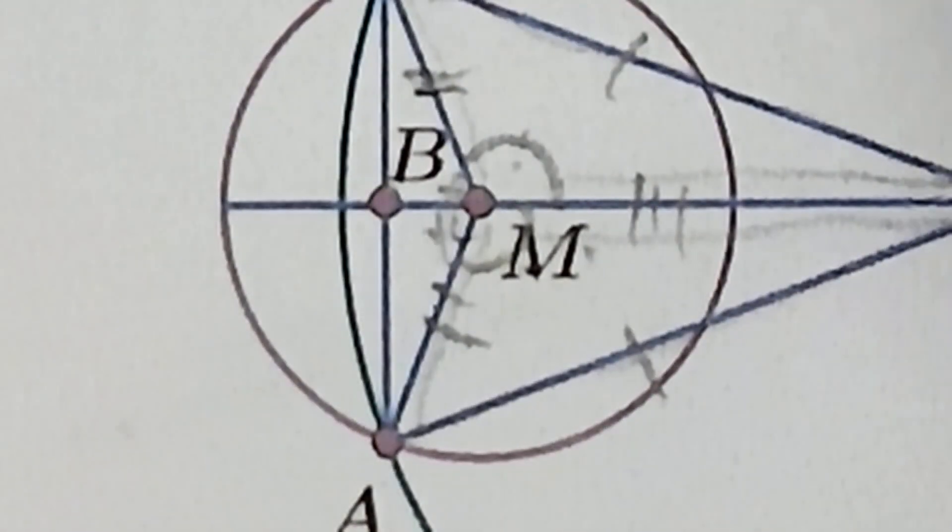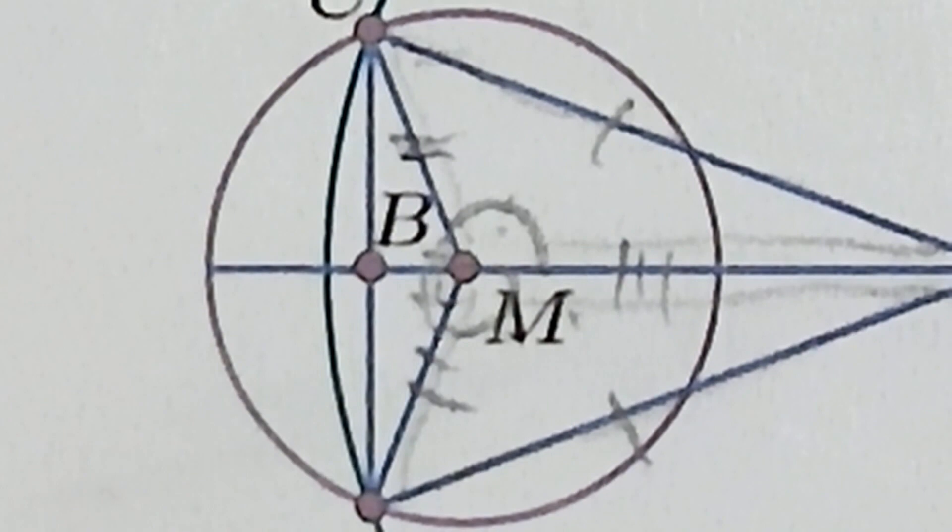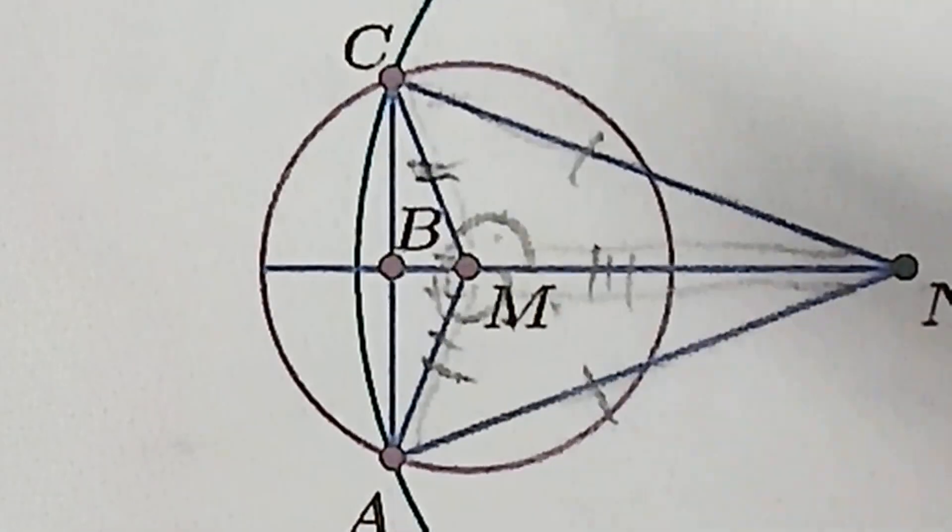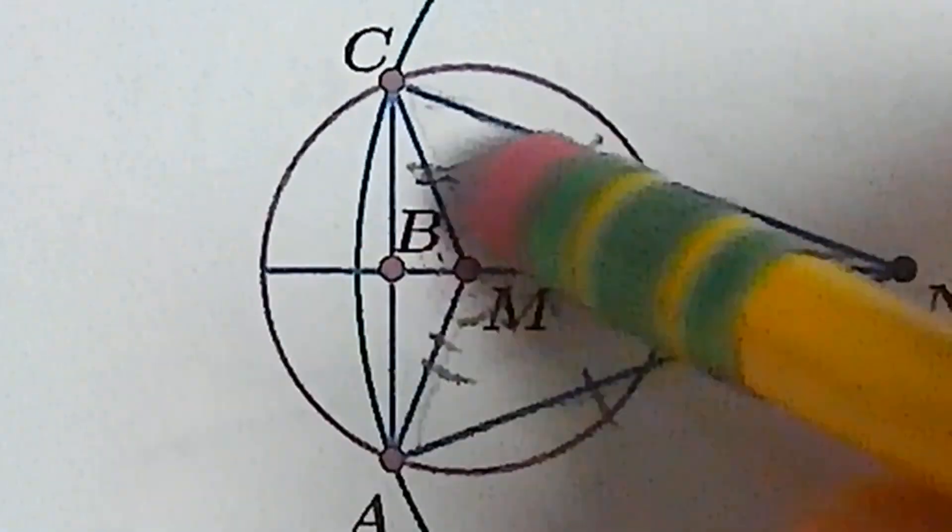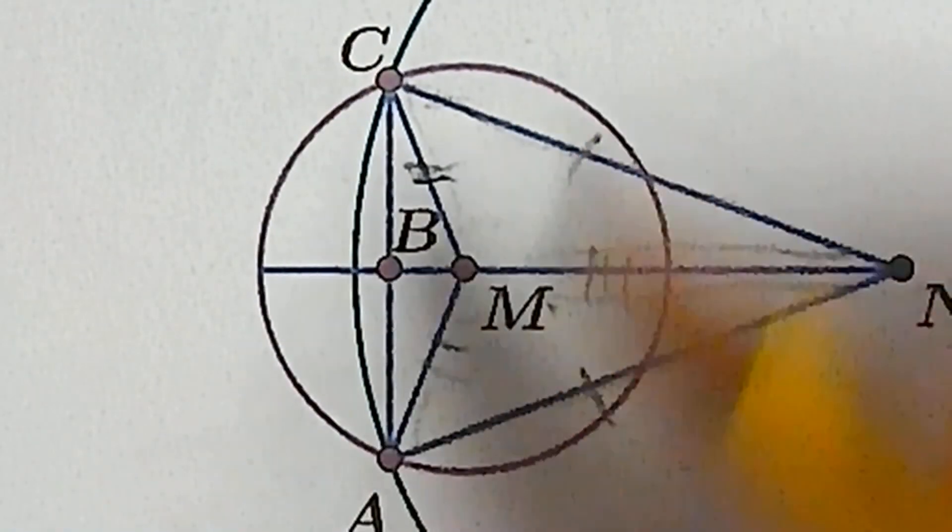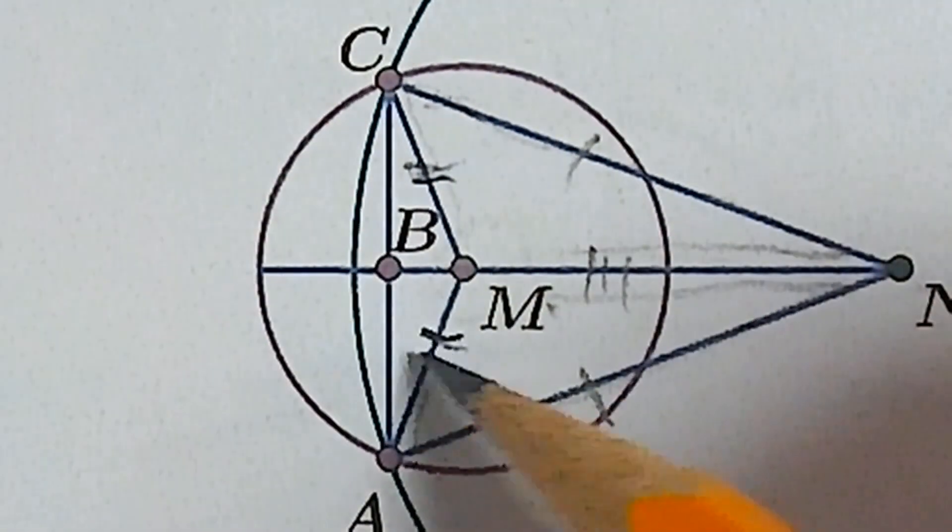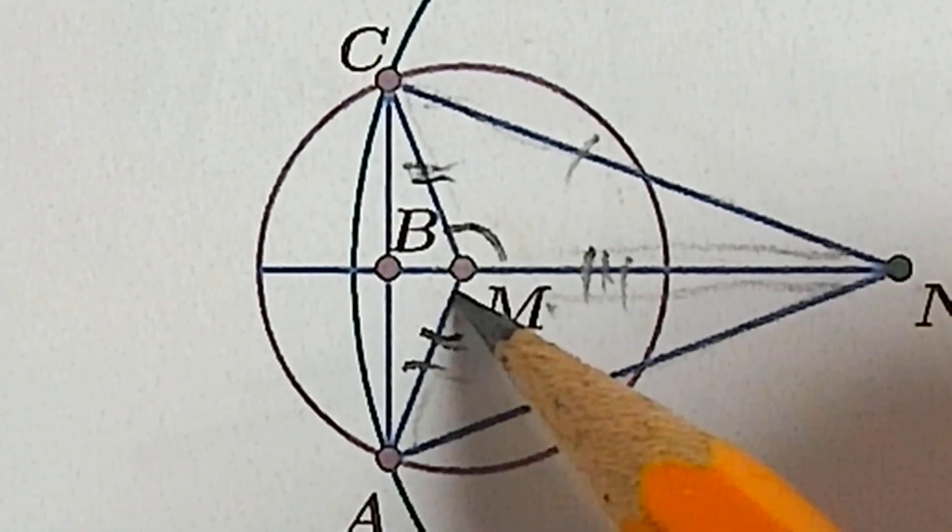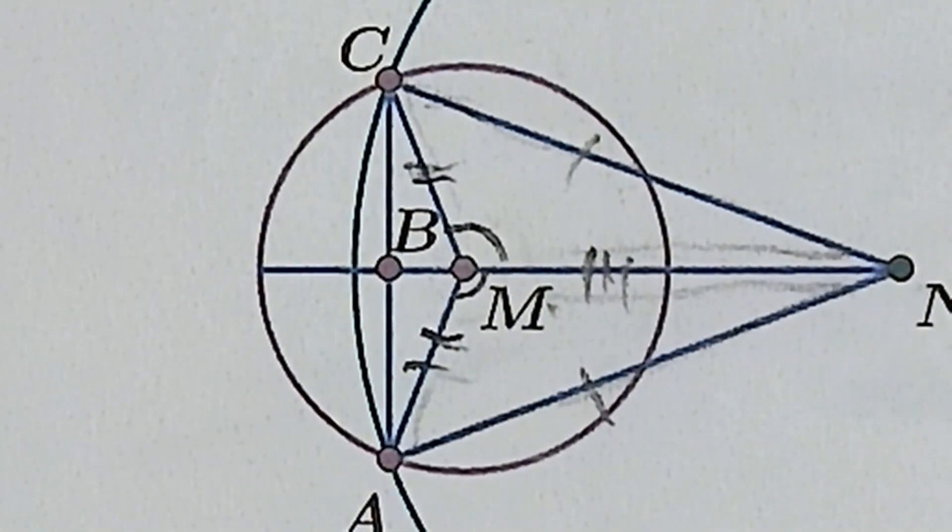So this is why I like my other one better, this looks blurry. So because we've proven these two triangles are congruent, we know this angle must be congruent to this angle by CPCTC.